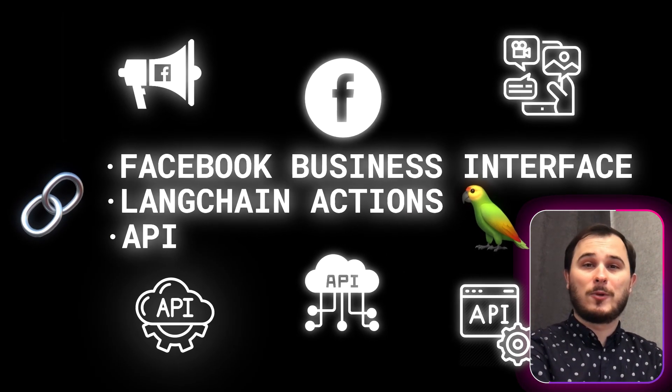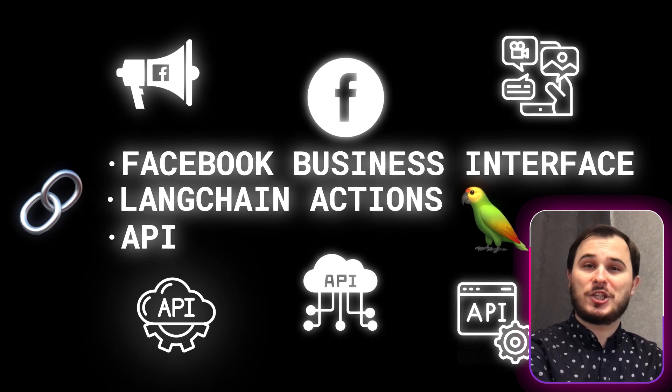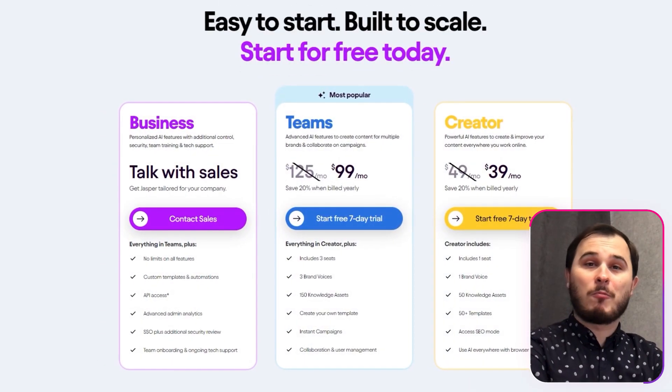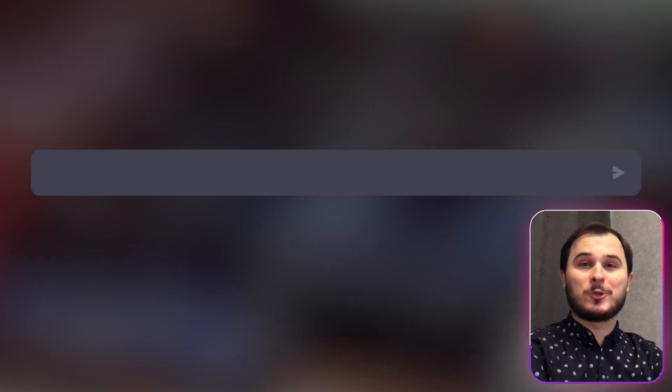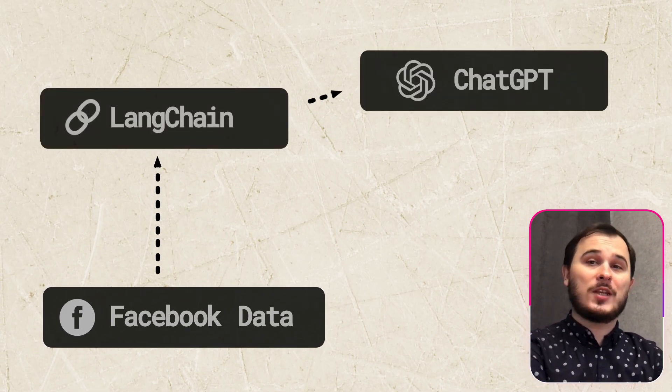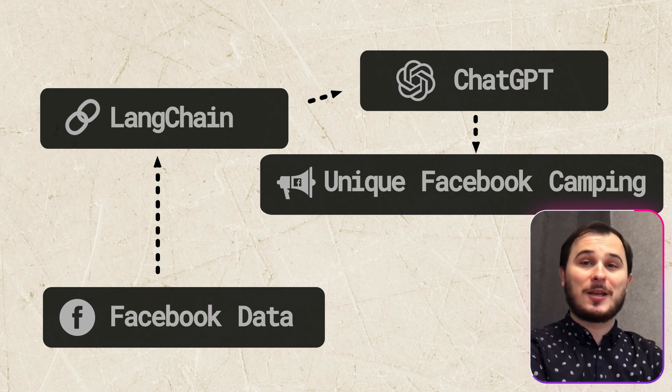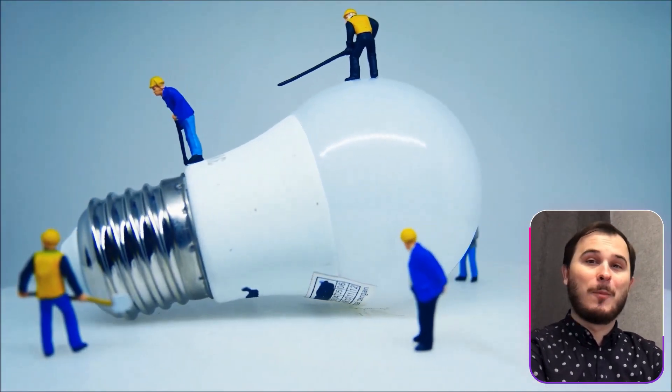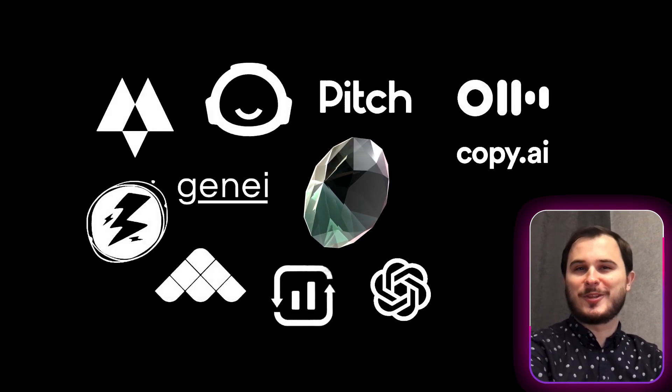Better yet, it could be automatically deployed to the Facebook business interface via Langchain actions and API. You've not only optimized your routine, but potentially crafted a SaaS platform that other marketing agencies can employ to generate their ad campaigns from a single prompt. Furthermore, they can upload their own Facebook ad data to refine and create uniquely tailored campaigns in no time. This innovation might signal a shift away from traditional roles — designers and marketing experts, watch out!